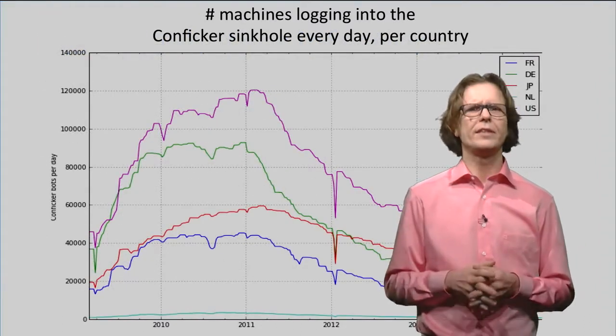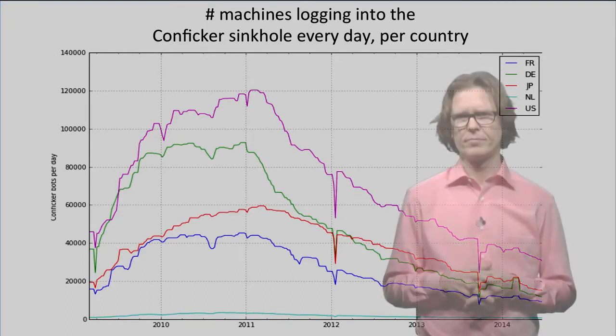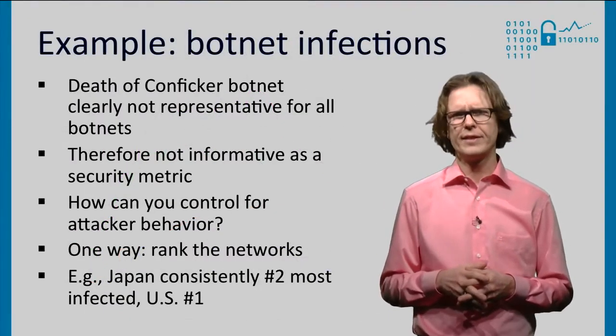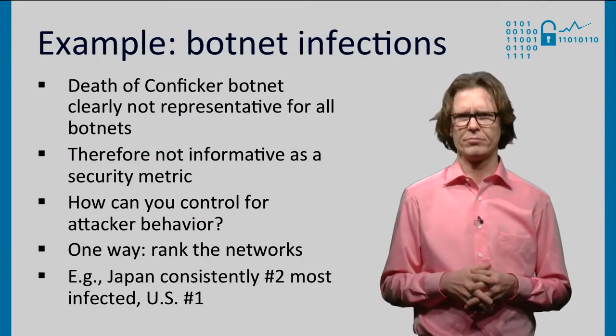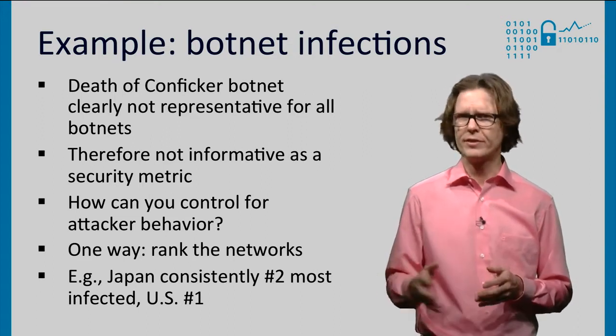We can see that the downward trend is likely caused by attacker behavior if you look at the metric over multiple organizations or multiple countries. In this picture, you see that multiple countries are moving together — that points to a common cause rather than to the effects of specific countermeasures. And here we see a key problem with incident data: it is also driven by attacker behavior. This is why it is a stochastic metric rather than a deterministic one.